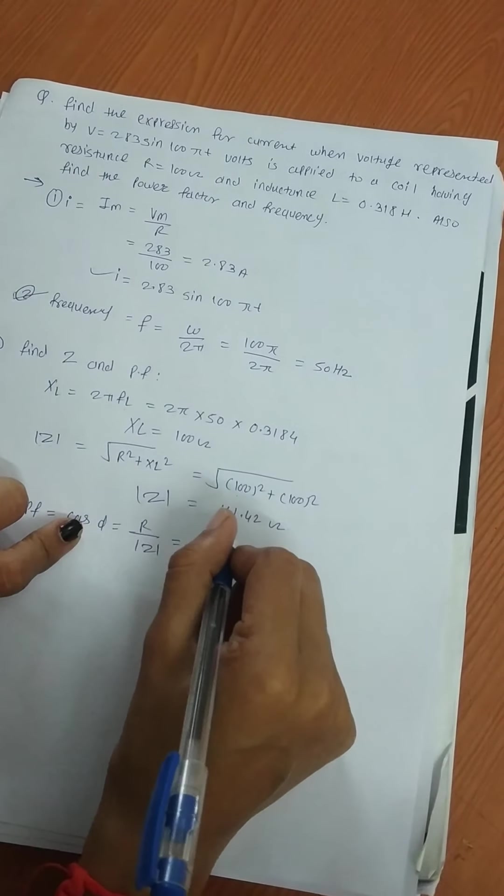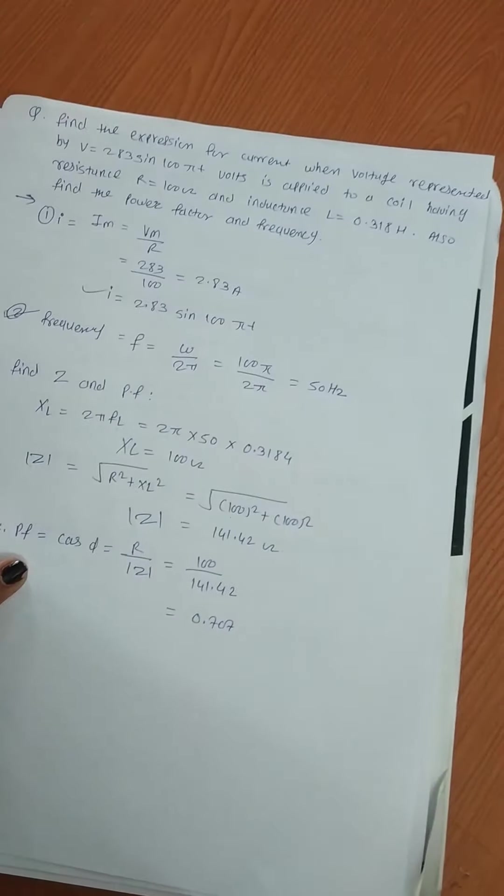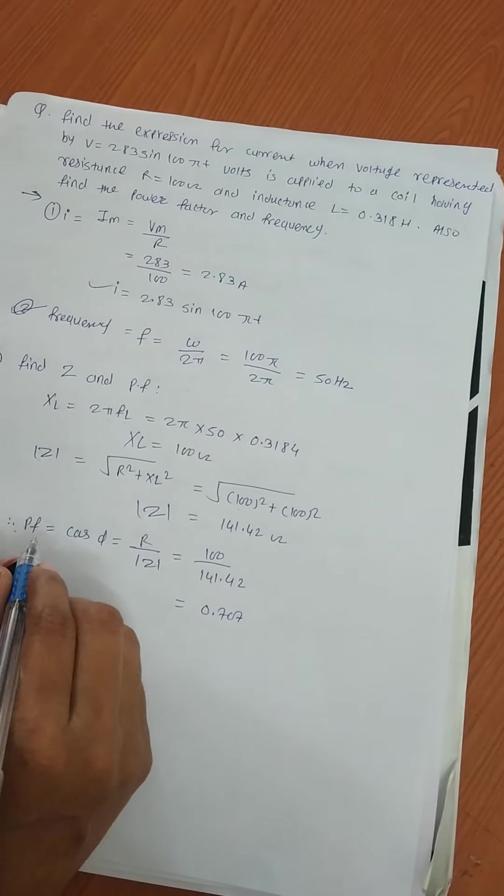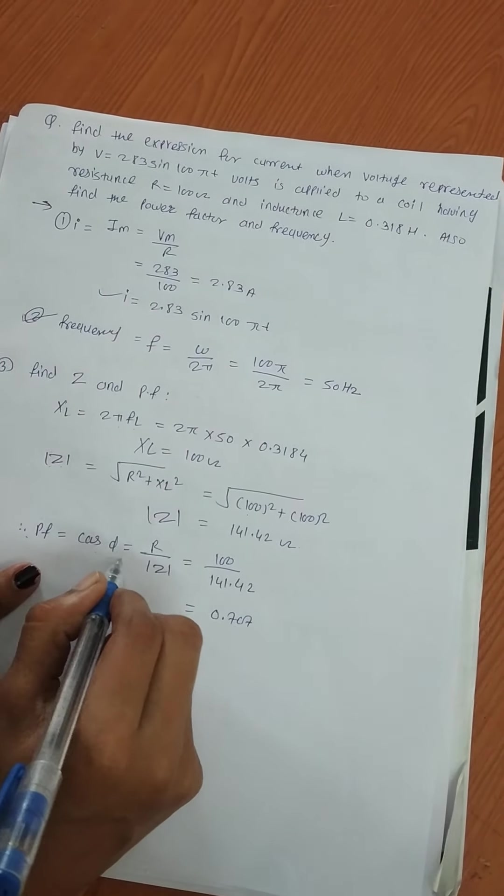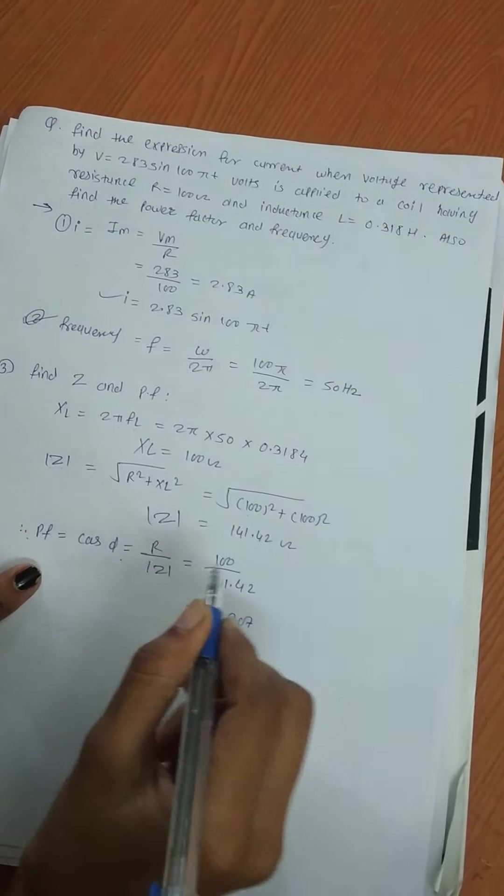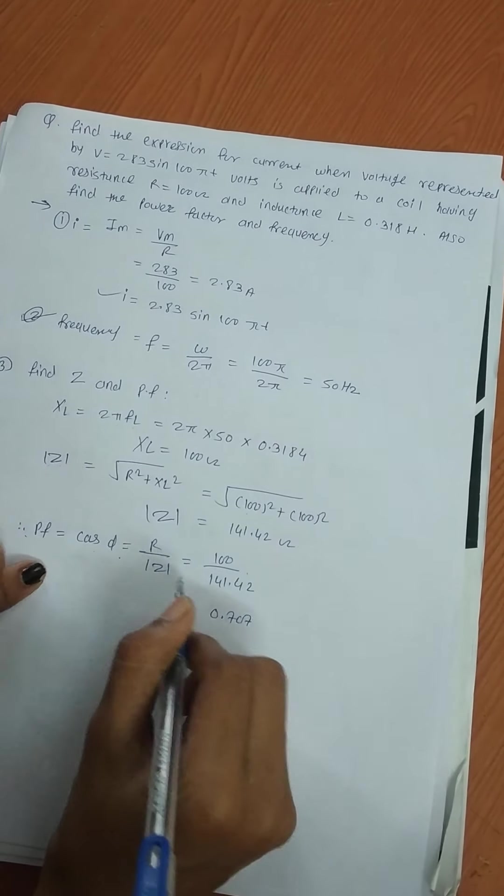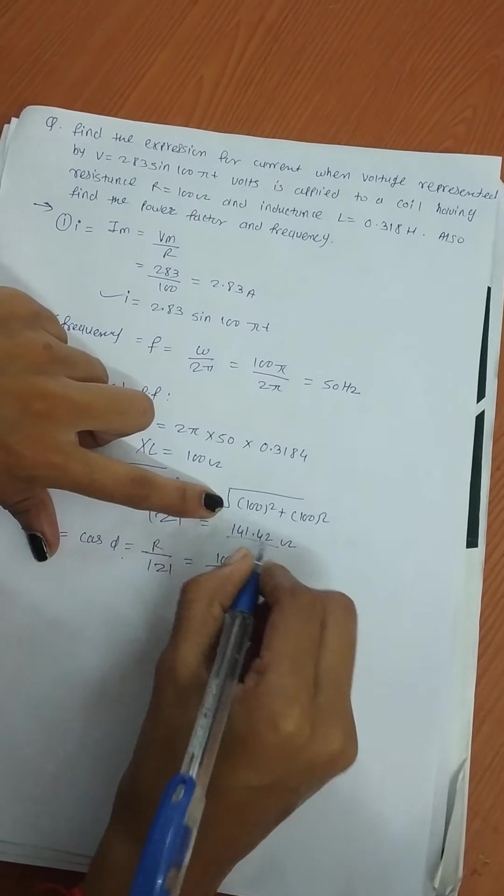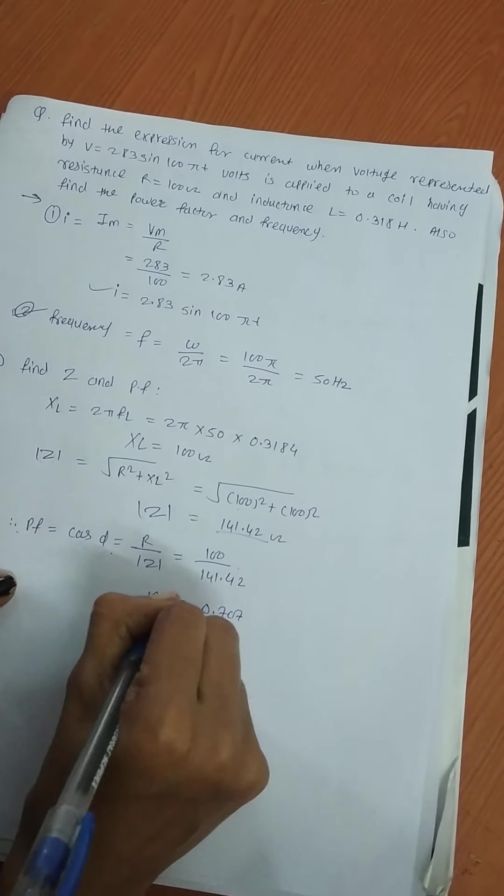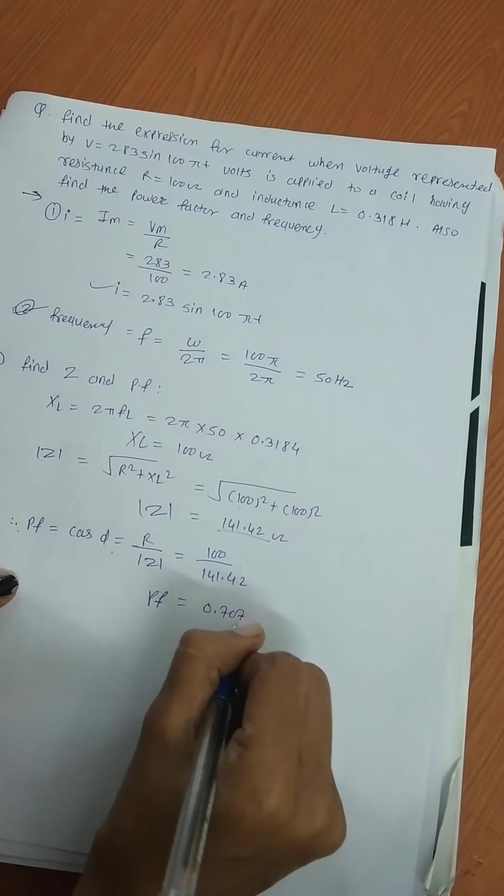Next, find power factor. Power factor = cos φ = R/|Z|. The value of R is 100 and |Z| is 141.42, therefore the power factor is 0.707.